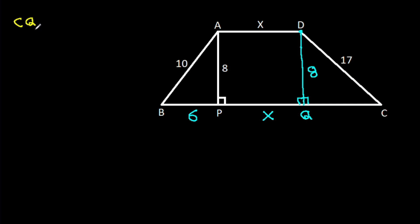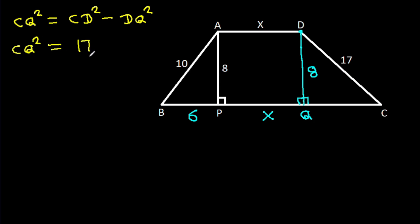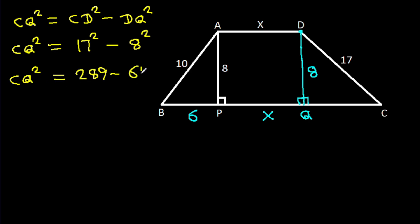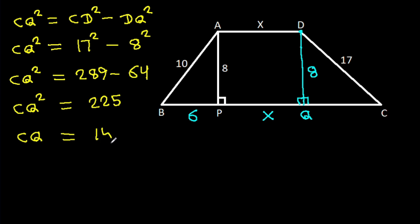And CQ² will be CD² minus DQ². CQ² is 17² minus 8², which is 289 minus 64. So CQ² is 225. That means CQ will be 15.